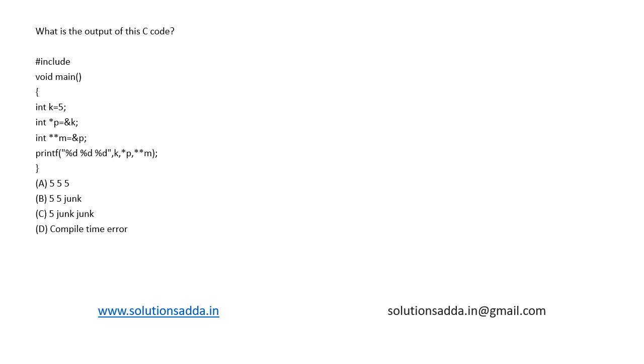This is a question from C Programming. Here we have an integer k equal to 5, a pointer variable which stores the address of k, a double pointer variable which stores the address of the pointer variable p, and we are asked to print the value of k, star p, and double star m. So let's try to solve it.